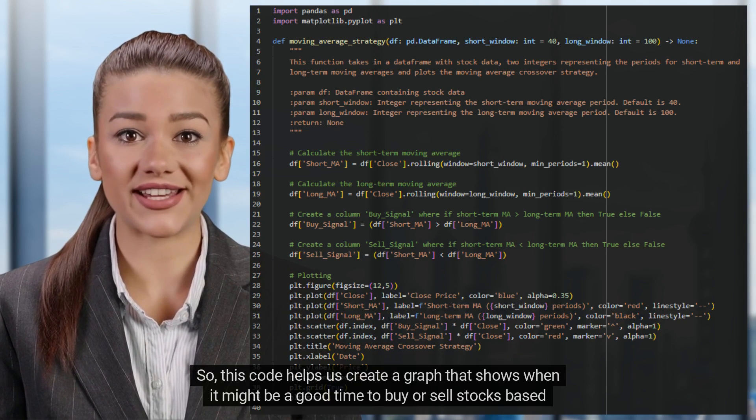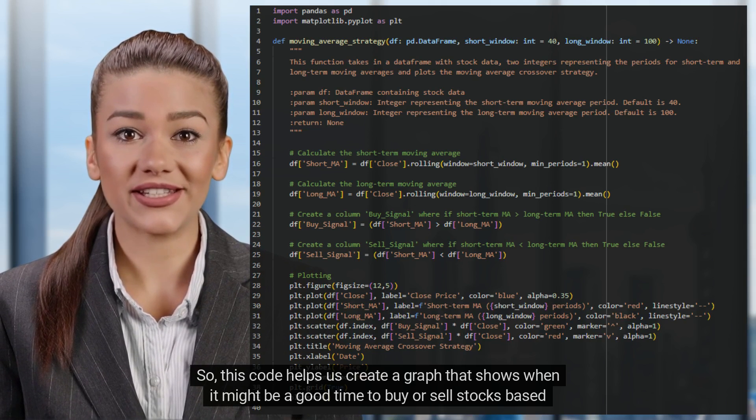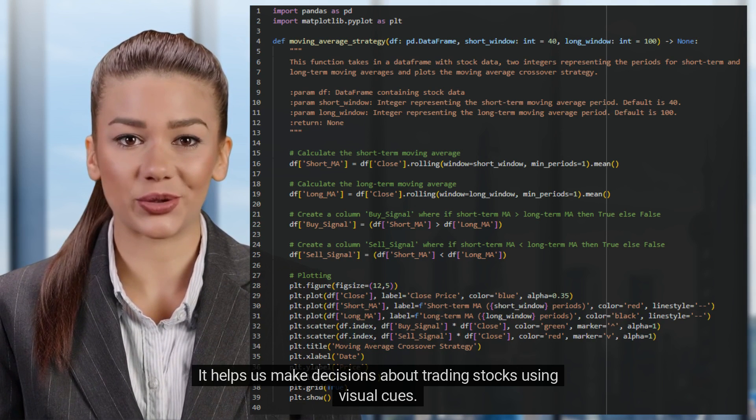So, this code helps us create a graph that shows when it might be a good time to buy or sell stocks based on moving averages. It helps us make decisions about trading stocks using visual cues.